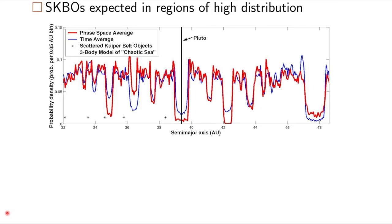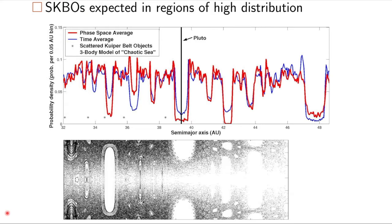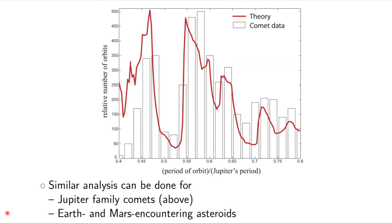This arises from the chaotic sea on energy shells in that three-body problem. We can apply this for other systems, such as the Jupiter family comets, where we're looking at a test particle in the field of the Sun in Jupiter. The actual comet data is shown as the bars, and the theory that comes looking at just an energy surface is shown in red. We can also apply the statistical theory to Earth and Mars encountering asteroids.